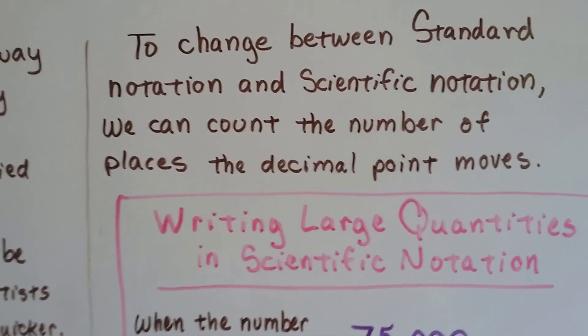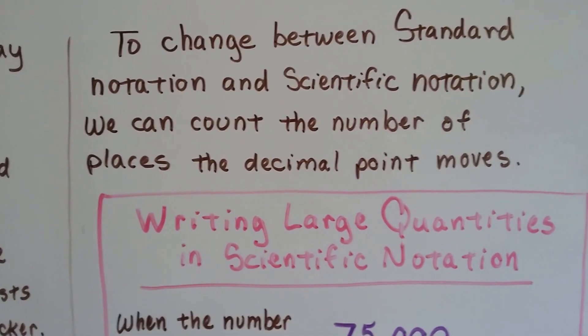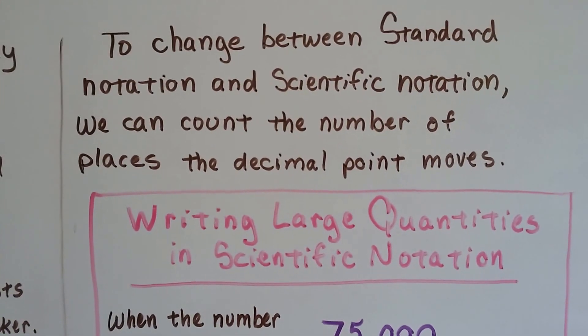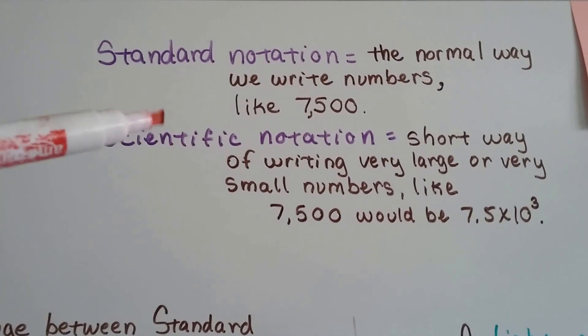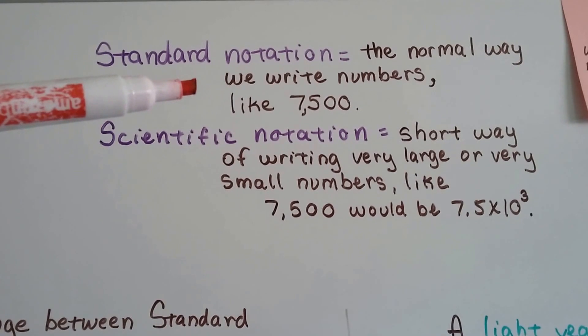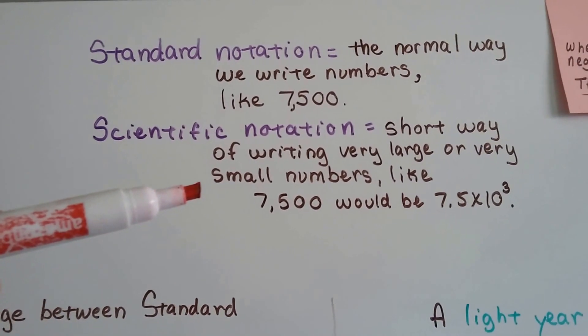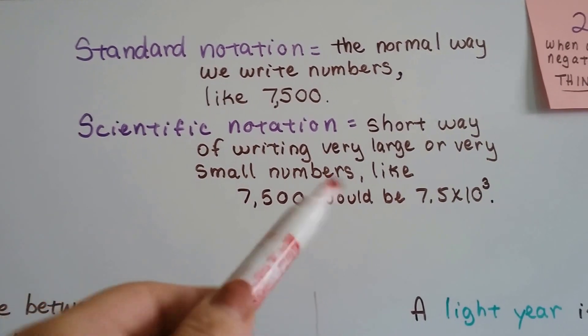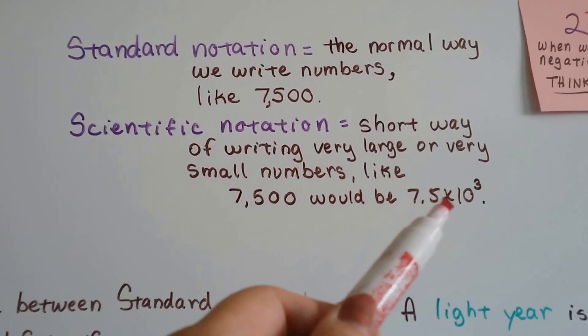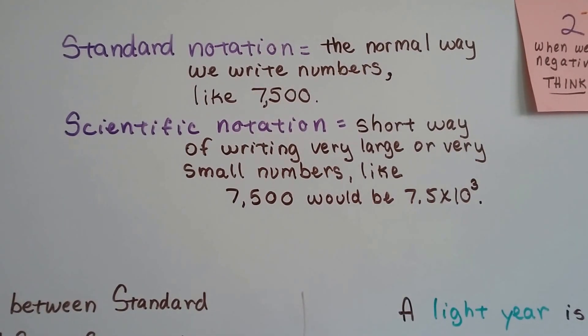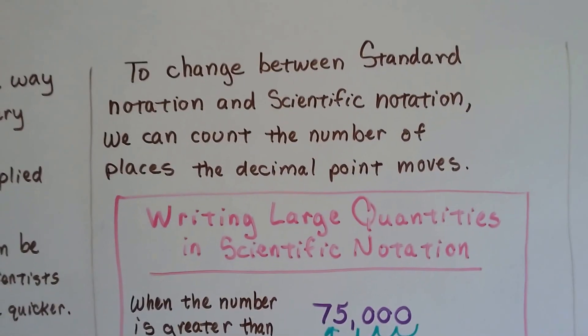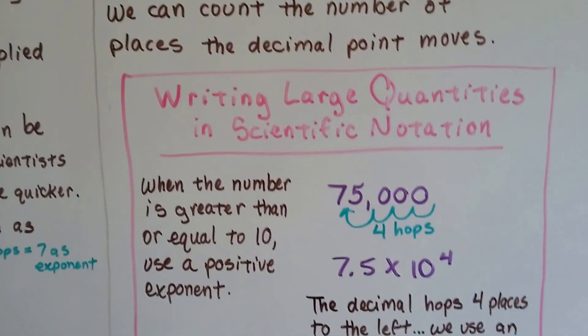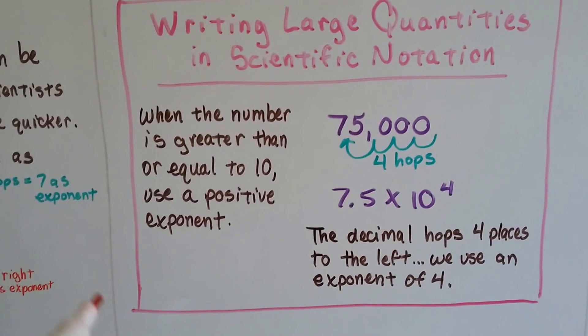To change between standard notation and scientific notation, we can count the number of places the decimal point moves. Remember, standard notation is the normal way we write numbers, like 7,500. Scientific notation would be taking 7,500 and writing it as 7.5 times 10 to the 3rd power. When the number is greater than or equal to 10, we use a positive exponent.